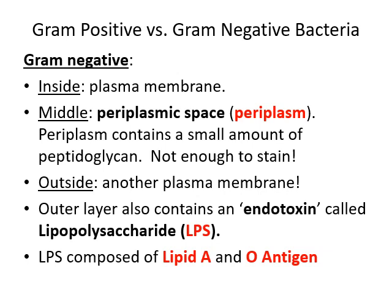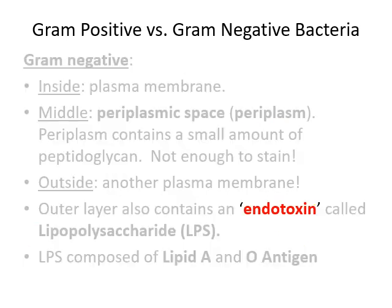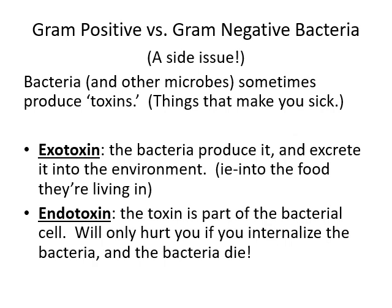The outer phospholipid bilayer of gram negative bacteria also contains the endotoxin lipopolysaccharide — LPS — which we learned about during the pathology section. Every gram negative bacterium has LPS in the outer plasma membrane. It won't harm you unless the bacteria is killed and falls apart, releasing the LPS — that can cause anaphylactic shock. LPS is composed of lipid A and the O antigen; the O antigen is probably the most allergenic part. Bacteria can also produce exotoxins — proteins including enzymes secreted into the environment — as opposed to endotoxins, which are integral to the cell membrane and not released unless the cell dies.